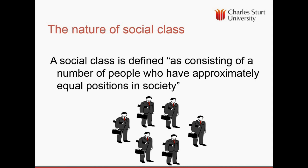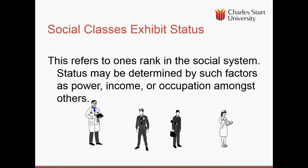The definition of social class consists of roughly a number of people who have approximately equal positions in society. What can determine your position? You might think wealth, education, reputation, where you live, or even who you've married. Social classes also exhibit status, and there's generally a rank in a social class system. Status, likeability, or prestige can be determined by factors such as power, income, and occupation, amongst others.